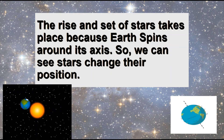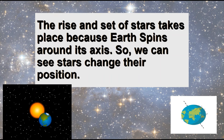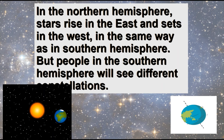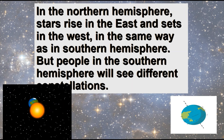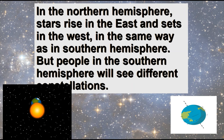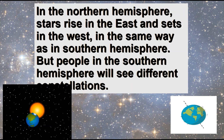The rise and set of stars takes place because the Earth spins around its axis, so we can see stars change their position. Stars rise in the east and set in the west — this is the same in both the Northern and Southern Hemispheres. Wherever you are in the world, the sun always rises in the east and sets in the west, but people in the Southern Hemisphere will see different constellations.